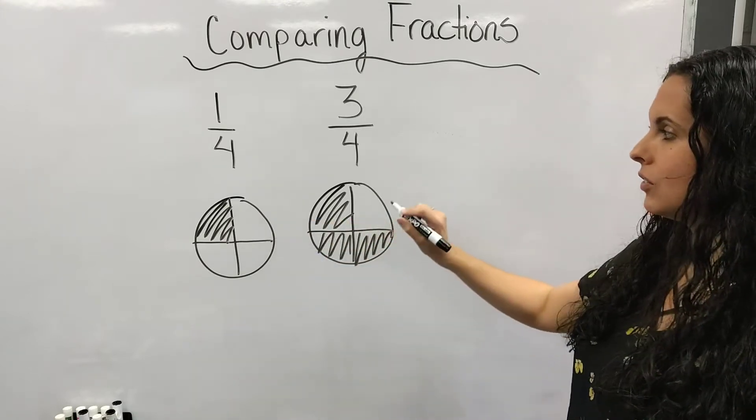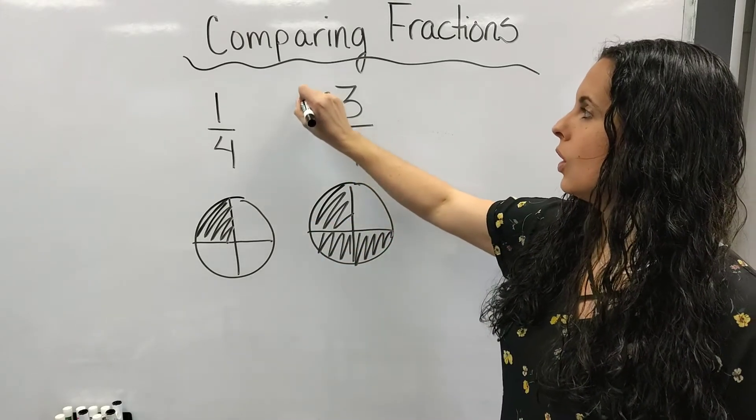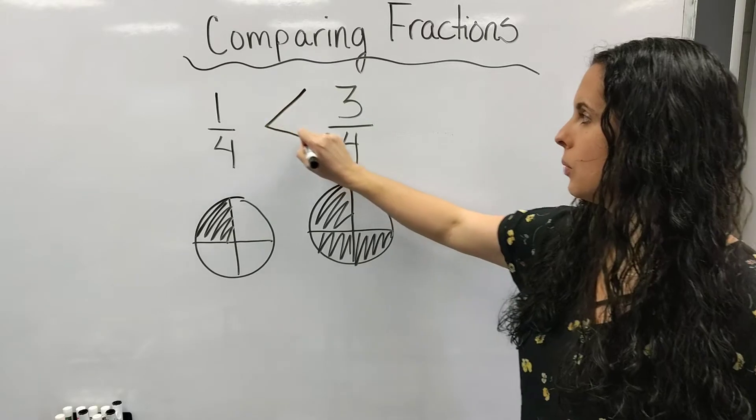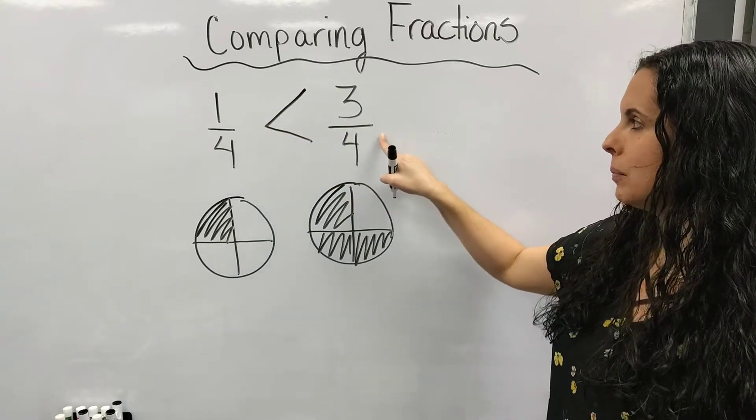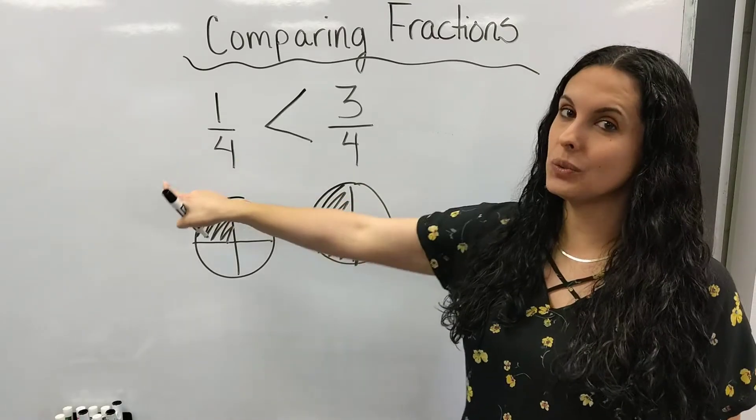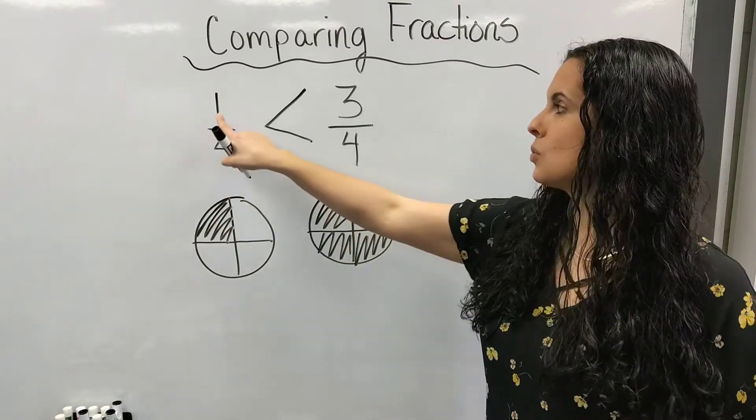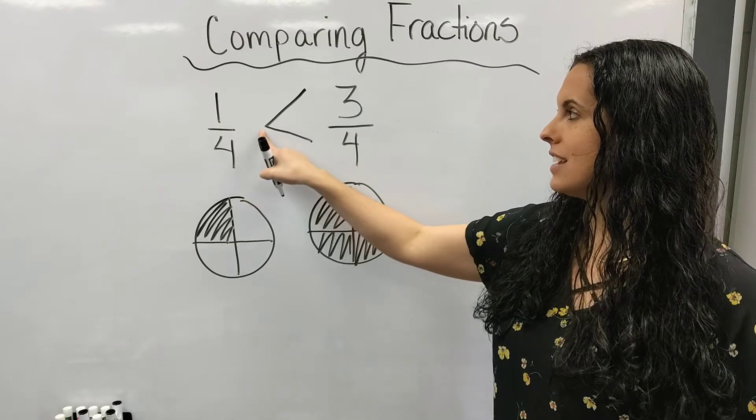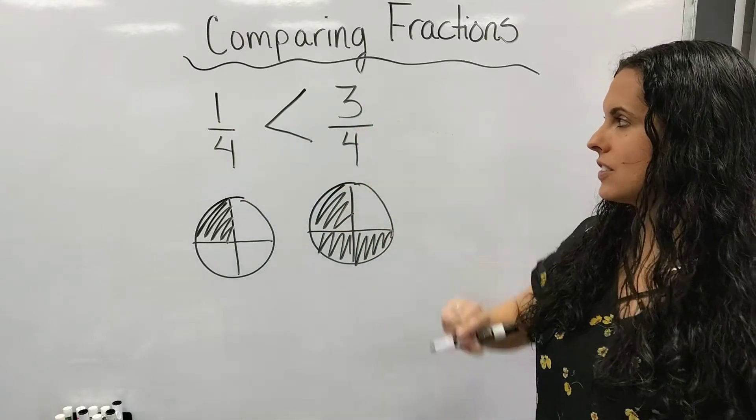When I compare, remember your symbol, the open mouth wants the bigger number. So three-fourths is my greater fraction here. When I read it, you read from left to right. It says one-fourth is less than three-fourths.